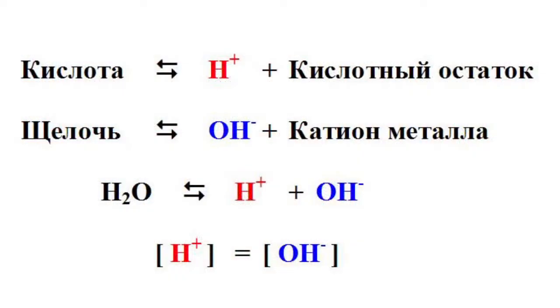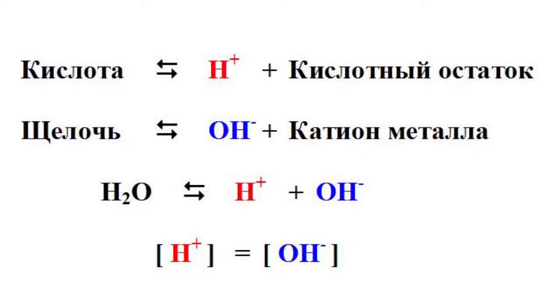All of us remember back from our school years that water solutions of any acids have one thing in common: they contain hydrogen cations, which define the acid properties of solutions. The alkaline properties of solutions are defined by other particles — hydroxide anions.